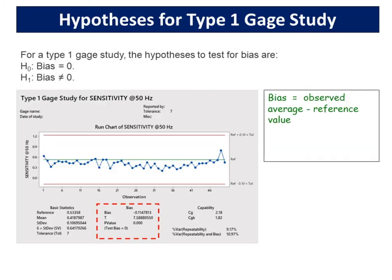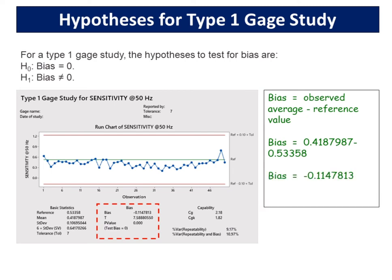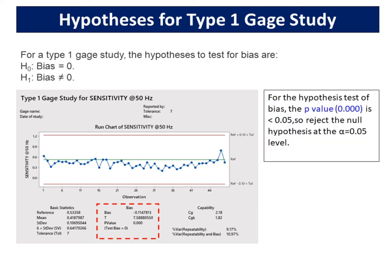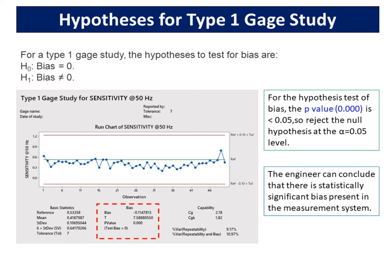For a type 1 gauge study, the hypotheses to test for bias are: the null hypothesis is bias equals 0, and the alternative hypothesis is bias is not equal to 0. Bias equals observed average minus reference value: 0.4187987 minus 0.53358, which equals minus 0.1147813. For the hypothesis test of bias, the p-value of 0.000 is less than 0.05, so we reject the null hypothesis at the alpha equals 0.05 level. The engineer can conclude that there is statistically significant bias present in the measurement system.